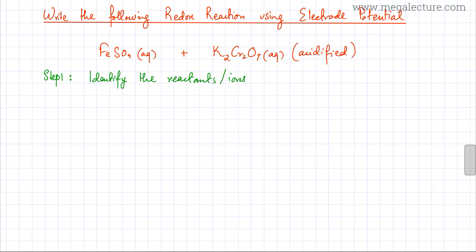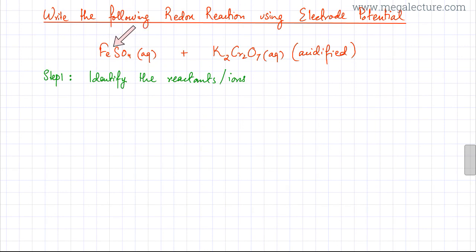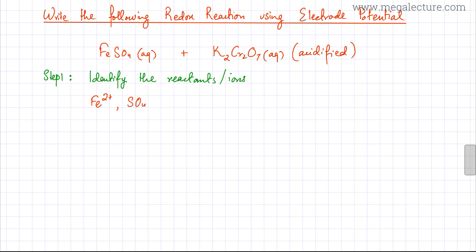Starting with step 1, we need to identify the reactants or ions in our reactants. FeSO4 consists of two ions: Fe2+ and SO4 2-. So my first two reactant ions are Fe2+ and SO4 2-.